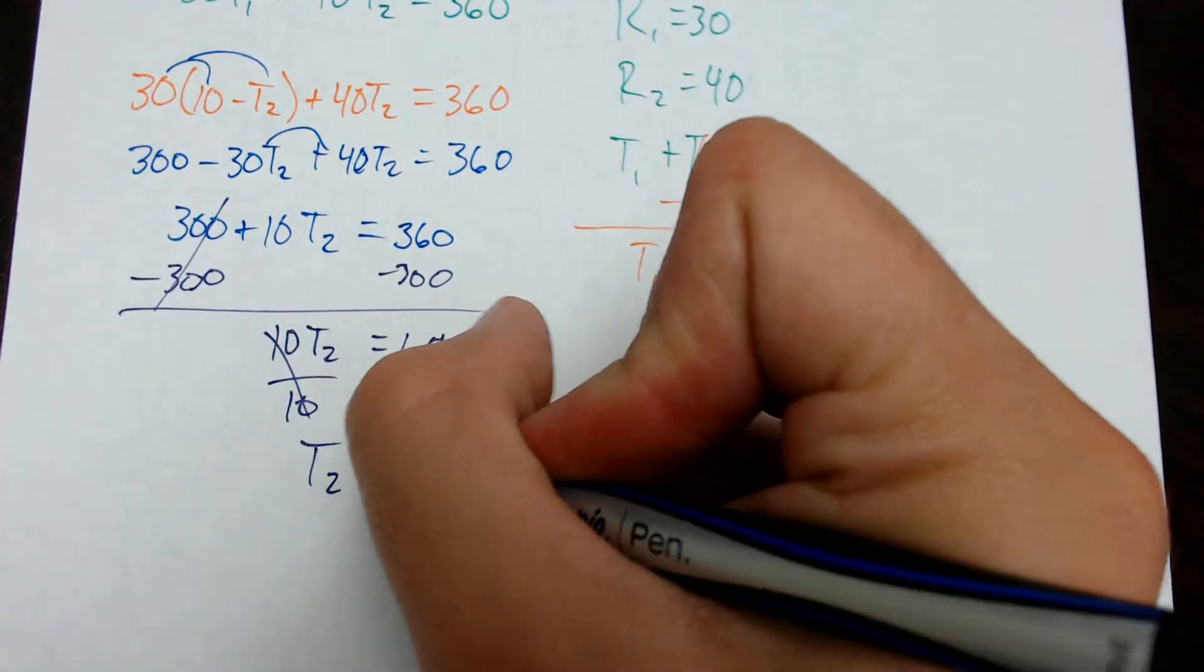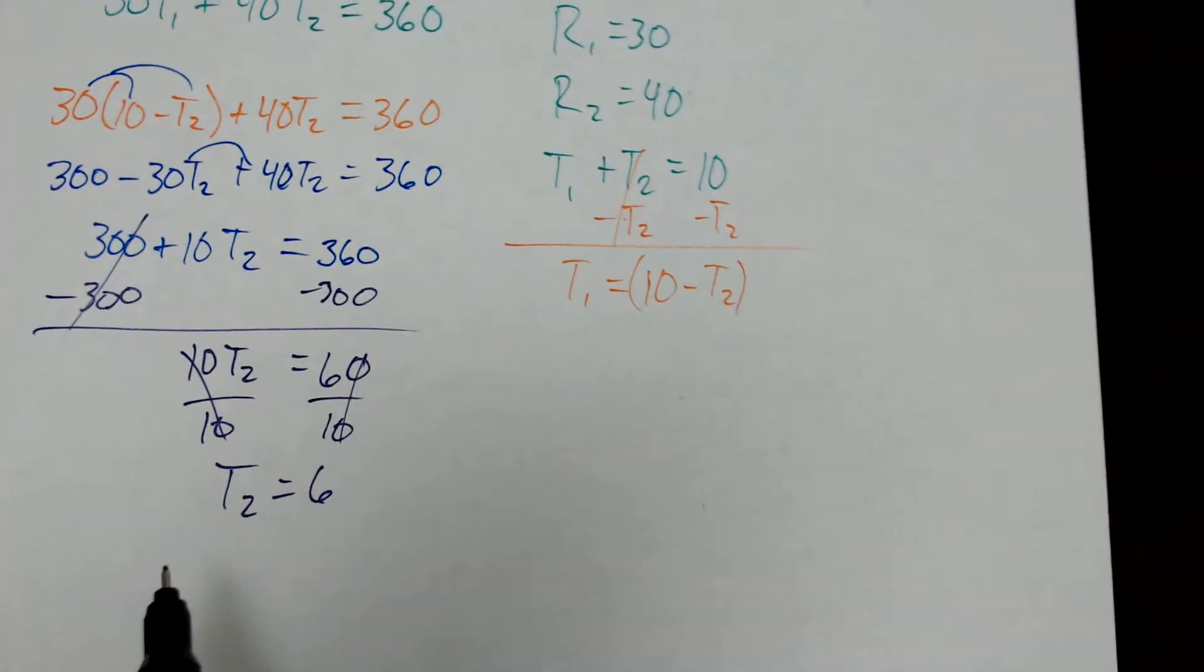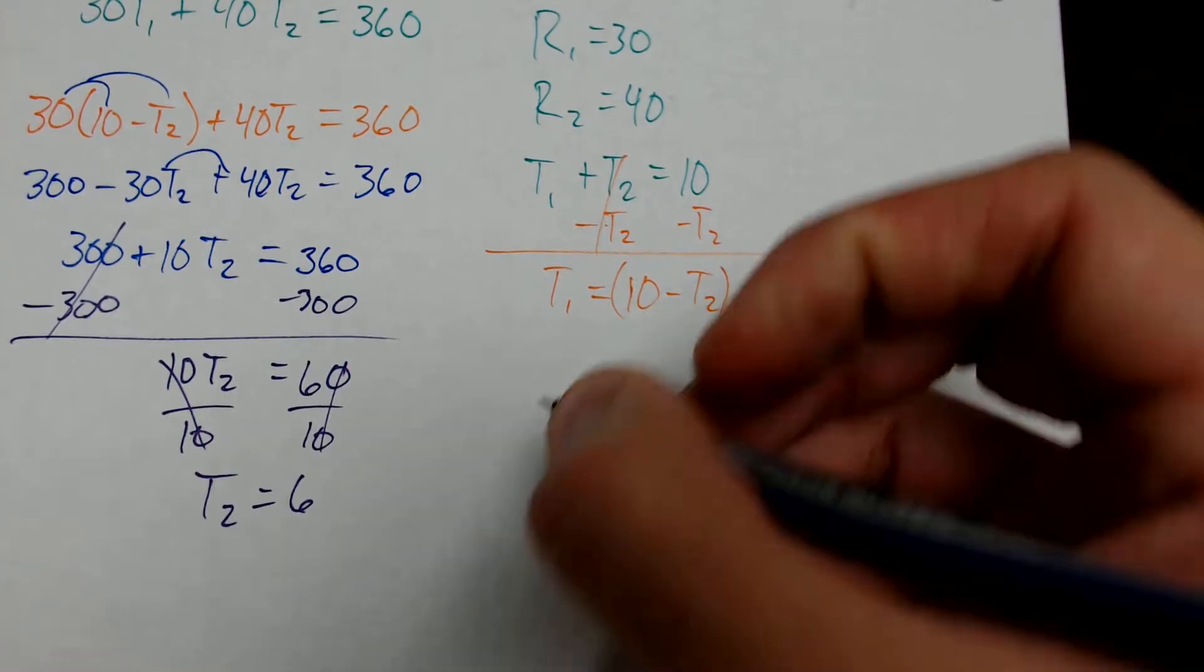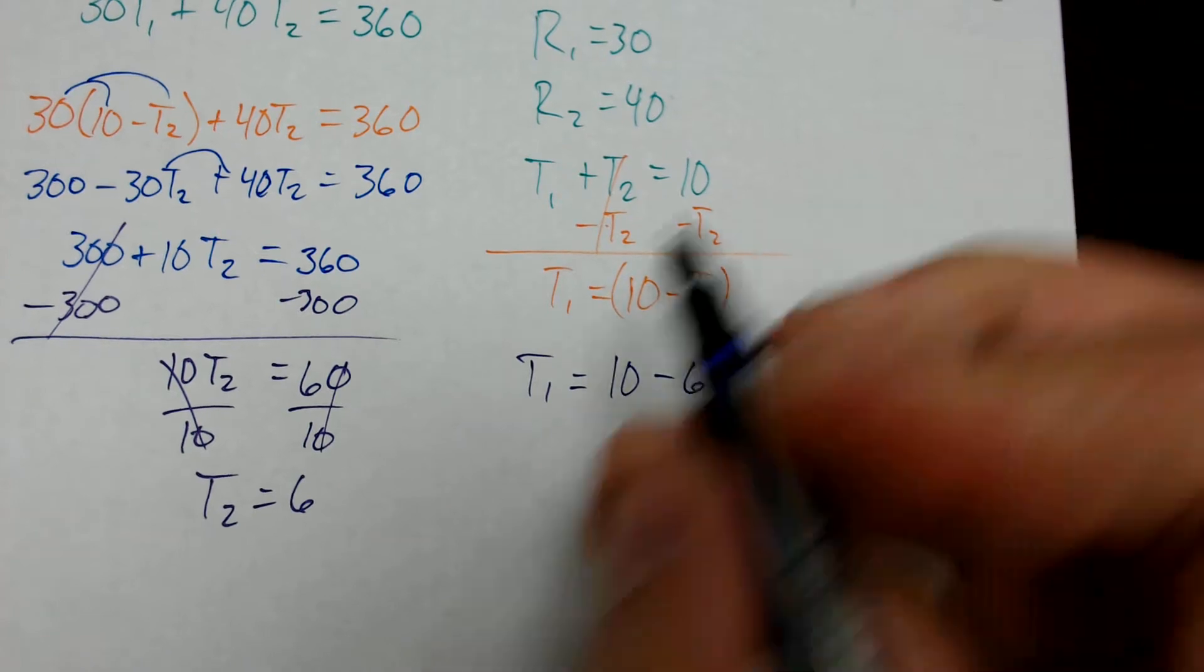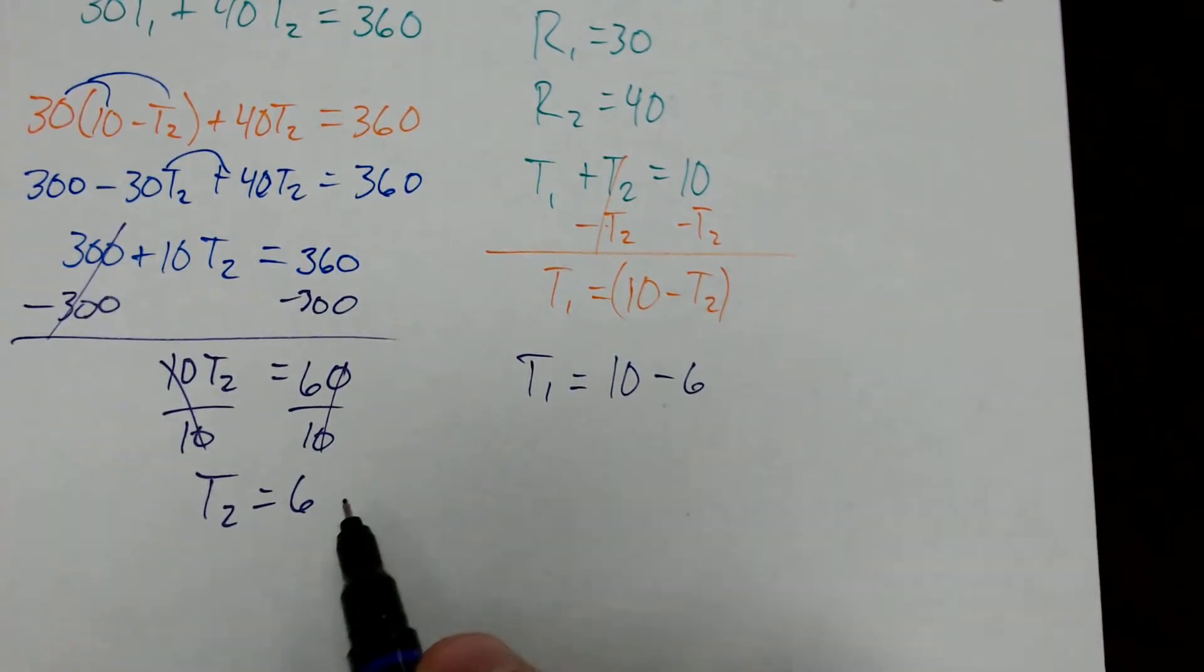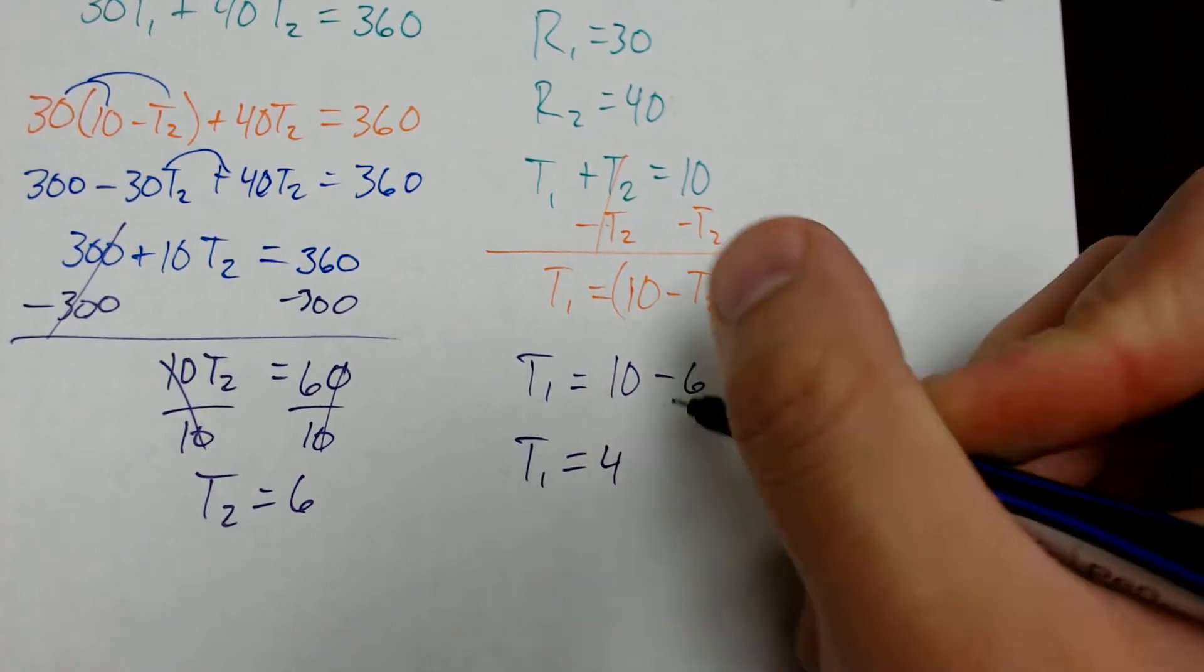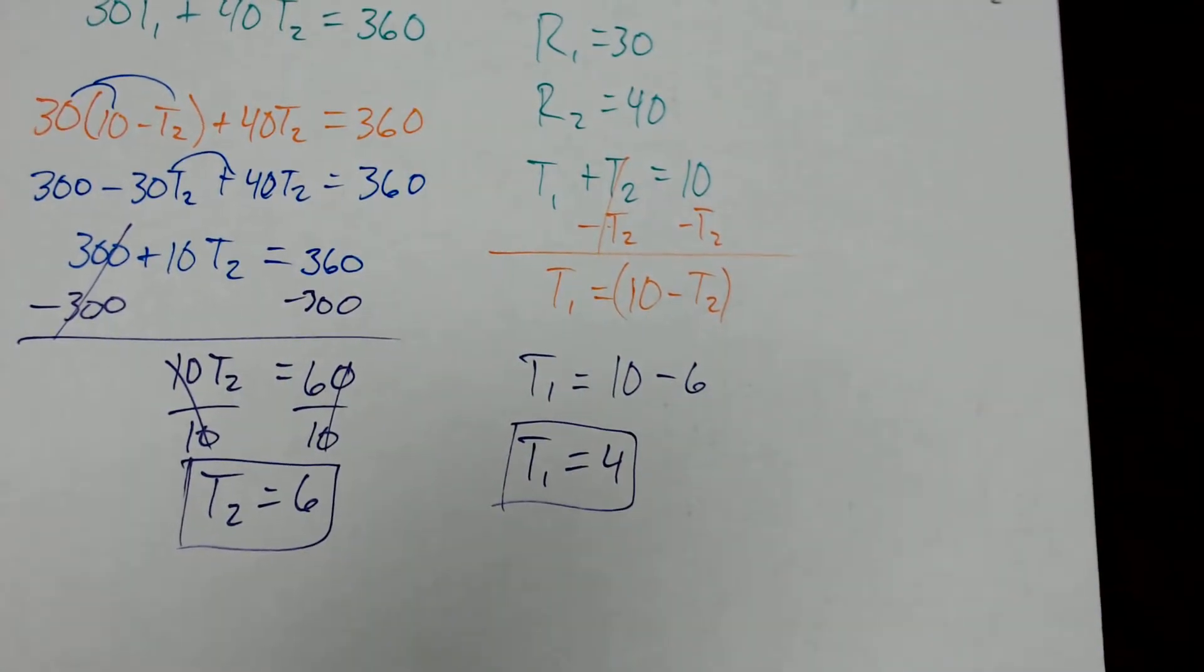And then I get that T2 is equal to 6. So I've solved for one of the missing numbers. Now if T2 is equal to 6, I can then plug that into here. T1 is going to equal 10 minus 6. Instead of writing T2, I write 6. So T1 is equal to 4, and I answered my equation.